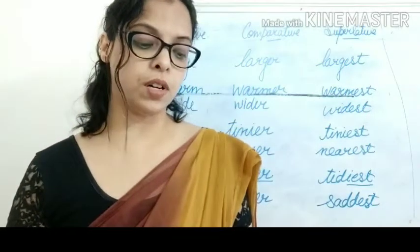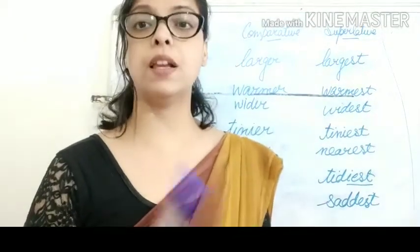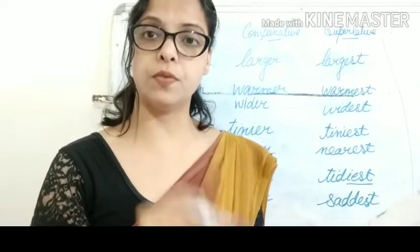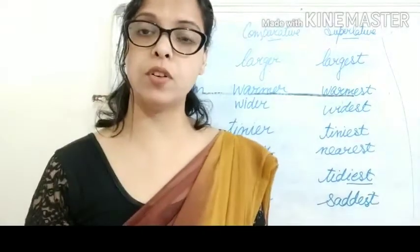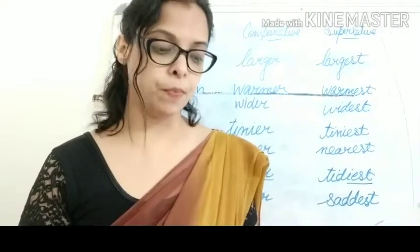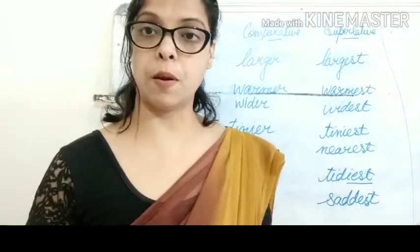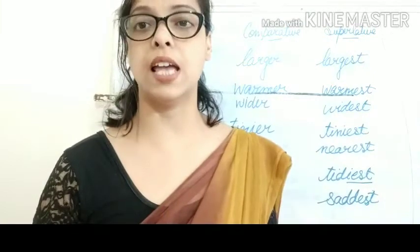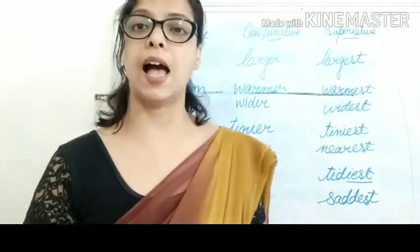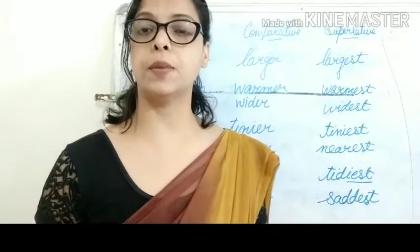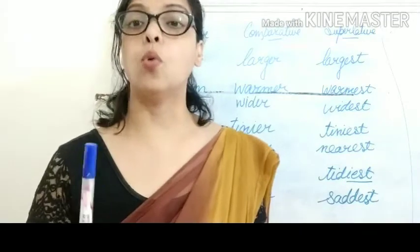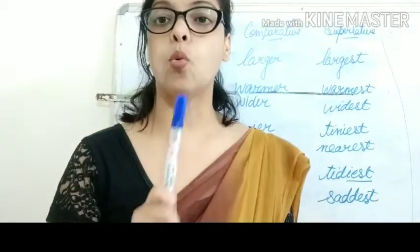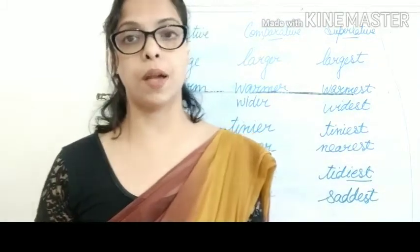Now 'worse' is given. The positive form in the first column is 'bad' — B-A-D. In the comparative column you write 'worse': W-O-R-S-E. And in the superlative column you write 'worst': W-O-R-S-T. So bad, worse, worst.